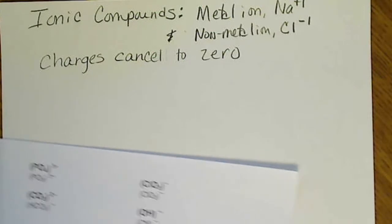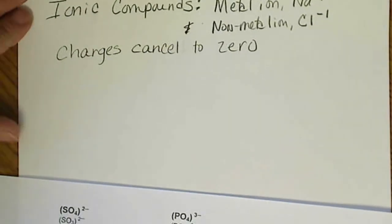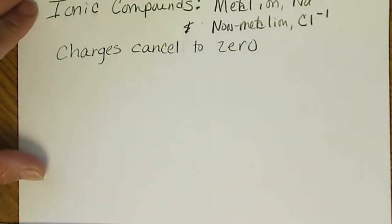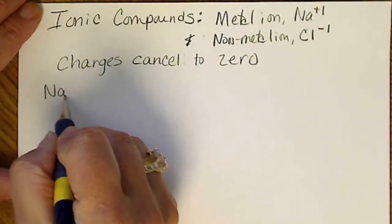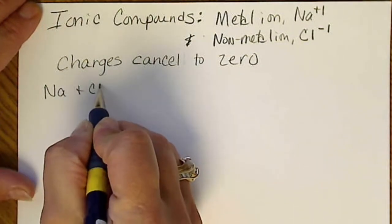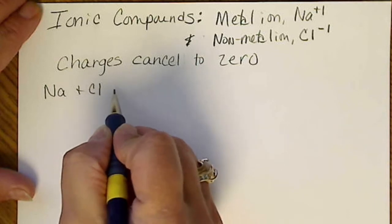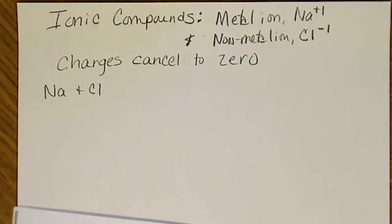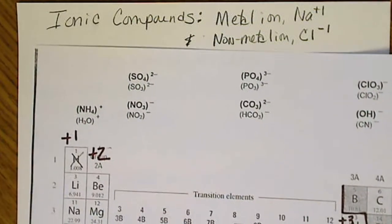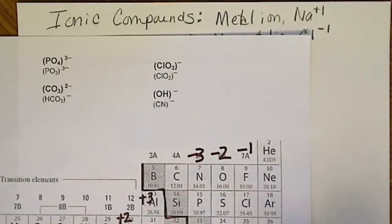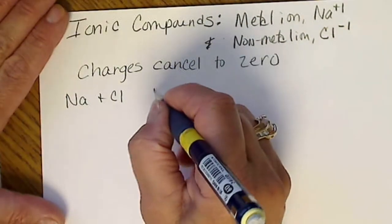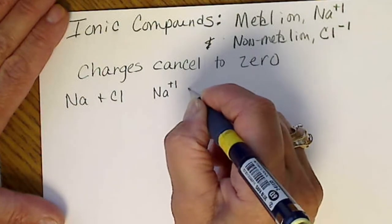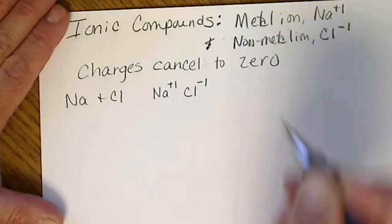So we're just going to practice coming up with formulas from the charges canceling to zero. For example, if we have a sodium and a chlorine atom, if we look at the charges, sodium is a plus 1, and chloride is in the minus 1 column. So we need to actually show the charges as Na plus 1 and Cl minus 1.